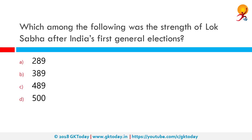Which among the following was the strength of the Lok Sabha after India's first general election? The Indian general election of 1951-52 was held from 25th October 1951 to 21st February 1952 and was the first election of the Lok Sabha since India became independent in August 1947. A total of 53 parties and 533 independents contested for 489 seats in the Lok Sabha. The correct answer is 489.